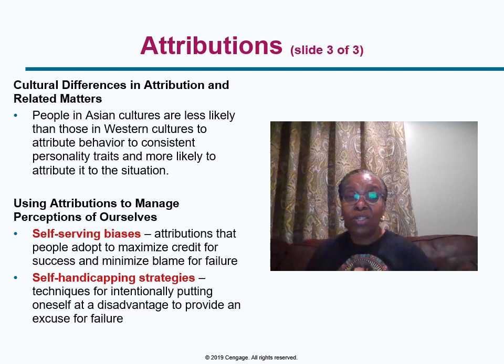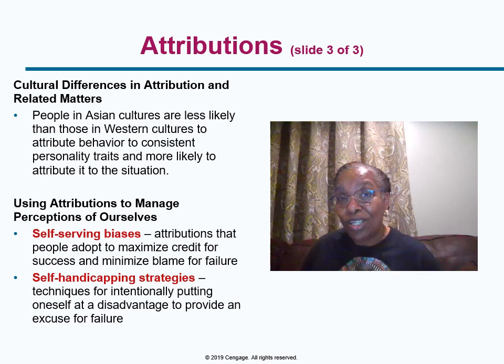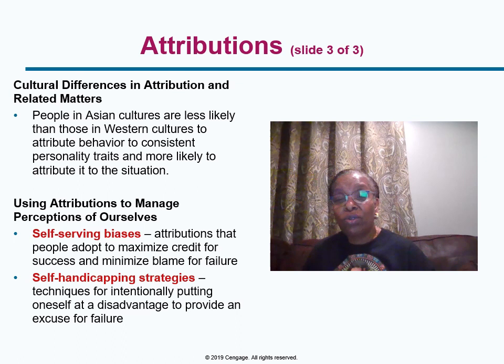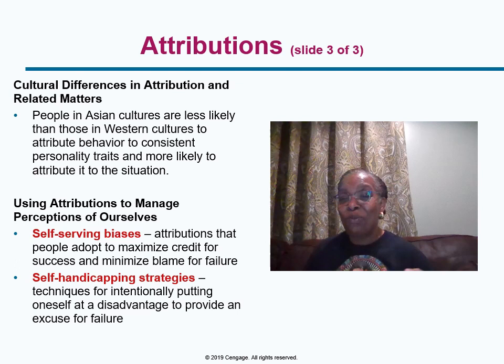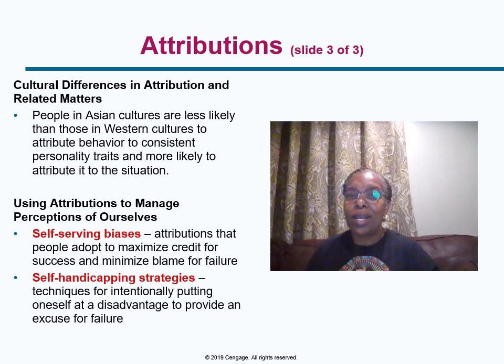You might credit your good grades to your intelligence and hard work — an internal attribution — but blame your worst grades on unfair tests, which would be an external attribution. People will sometimes place themselves at a disadvantage to provide an excuse for failure. If you're afraid you'll do poorly on an exam, you might stay out late and party hard the night before so you can blame a low score on lack of sleep, without admitting you might have done poorly anyway because you didn't open the book.